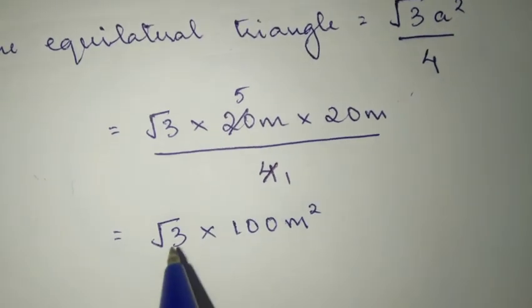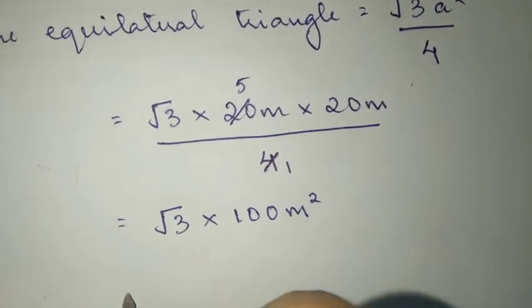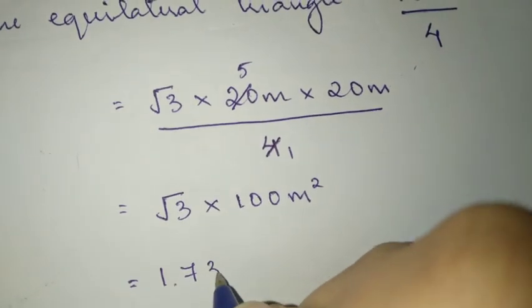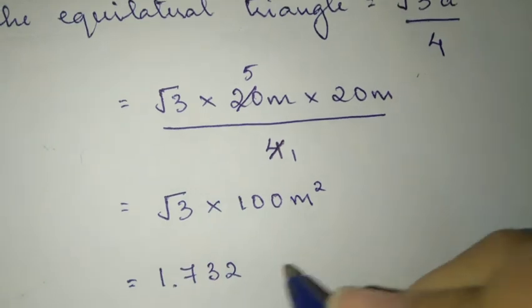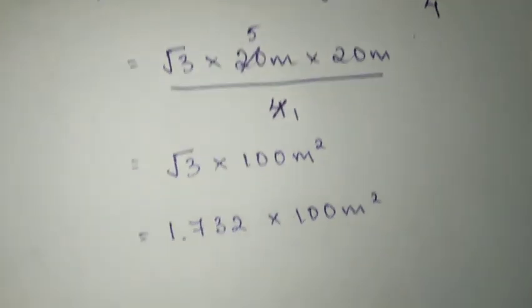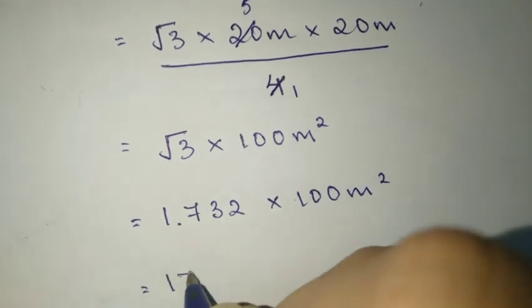Now, we need to find the value of root 3. Root 3 is 1.732. You should remember this value.